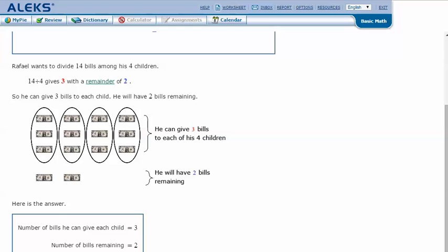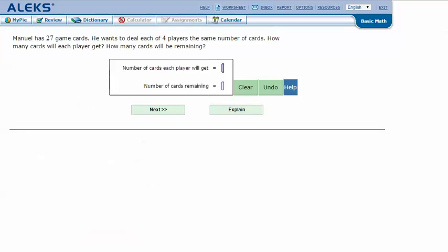Let's try another one. Manuel has 27 game cards. He wants to deal each of four players the same number of cards. How many cards will each player get? How many cards will be remaining?